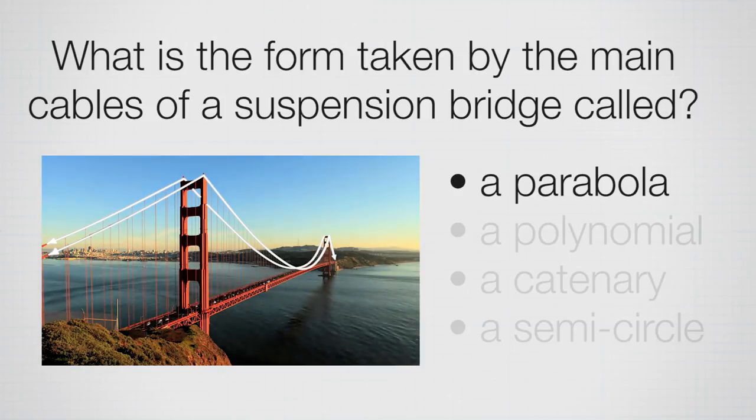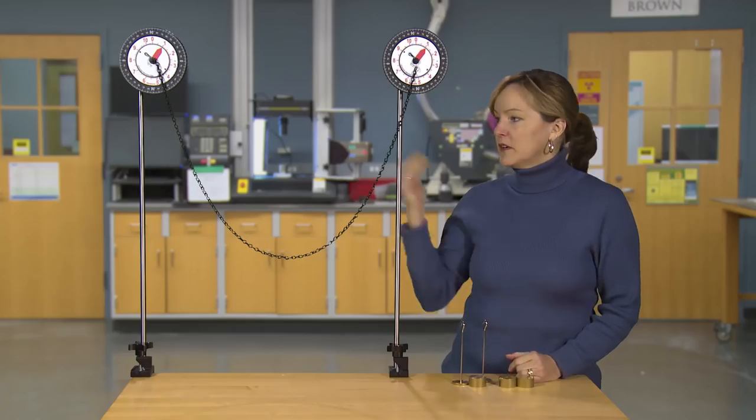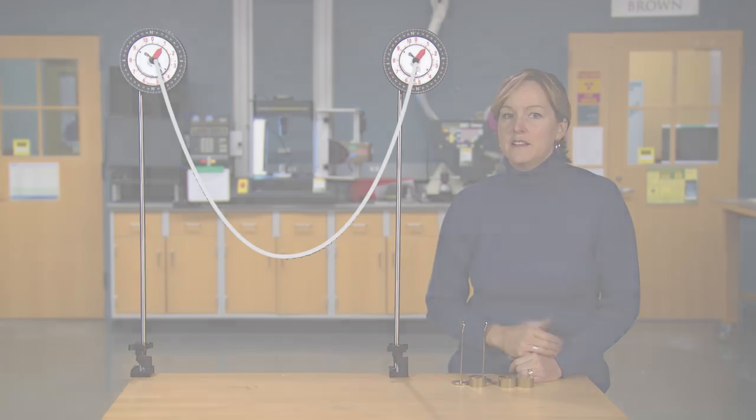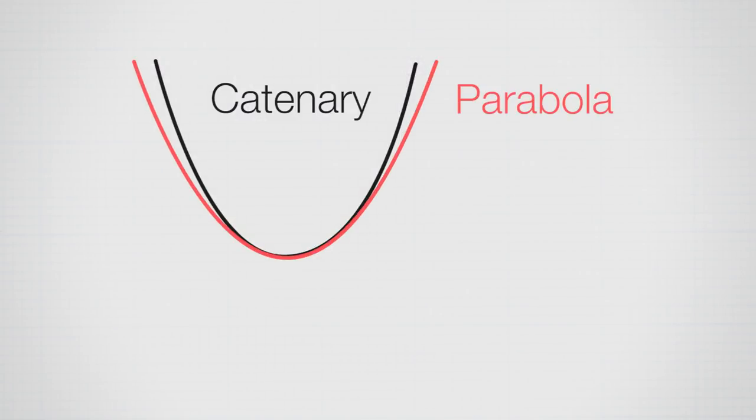So the main cables of a suspension bridge make a parabola, whereas this chain hanging with no load is a catenary. Catenaries versus parabolas, what's the difference?